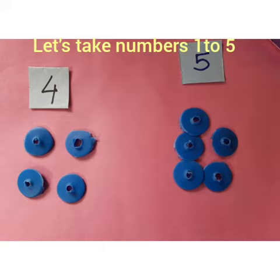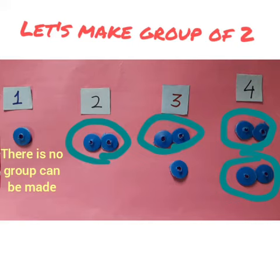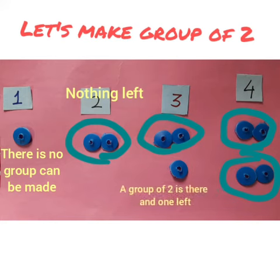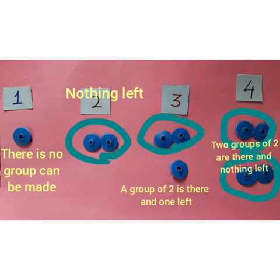If we are going to make a group of 2, here we can see there is no group made for 1. After making a group, there is nothing left for 2. For 3, one is left, and for 4, nothing is left.